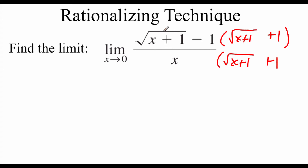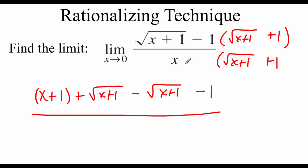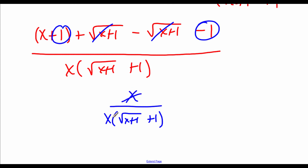Foiling the top: the square root of x plus 1 times itself leaves x plus 1. Then negative 1 times the square root of x plus 1 and plus 1 times the square root of x plus 1 cancel each other out. And negative 1 times 1 is negative 1, which cancels with the plus 1, leaving just x on top. On the bottom, we leave it as x times the square root of x plus 1 plus 1. The x's cancel each other out.